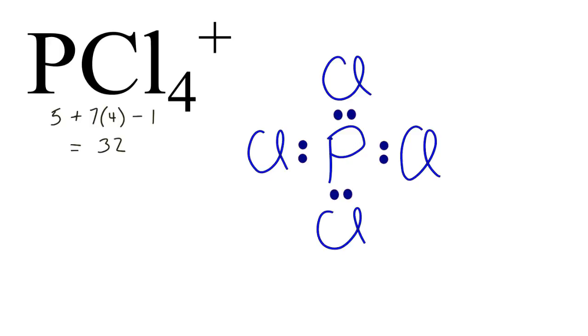Let's place those around the outside to fill the octets of the chlorines. We've now used all 32 valence electrons.